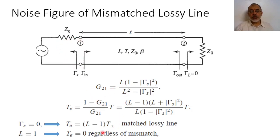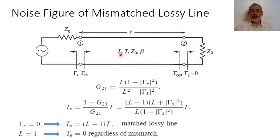The other extreme: if the attenuation coefficient L = 1, then L − 1 = 0, so the equivalent noise temperature equals zero. This means that if there is no attenuation in the transmission line section, equivalently if there is no attenuation in the passive two-port network, the equivalent noise temperature is zero — there is no noise in this case.